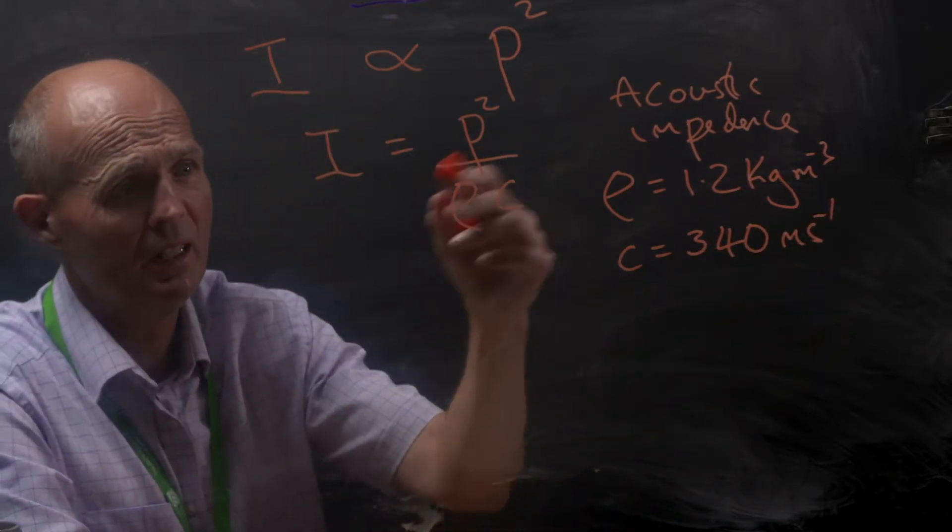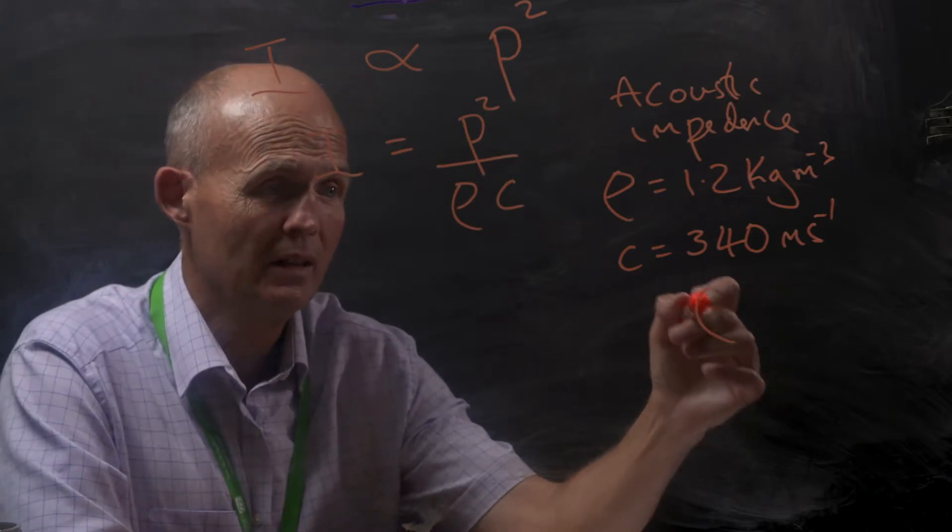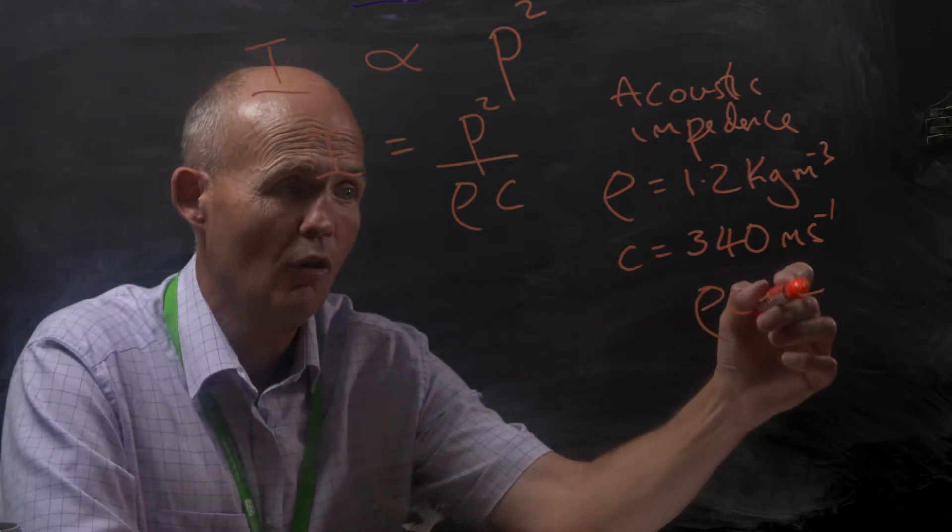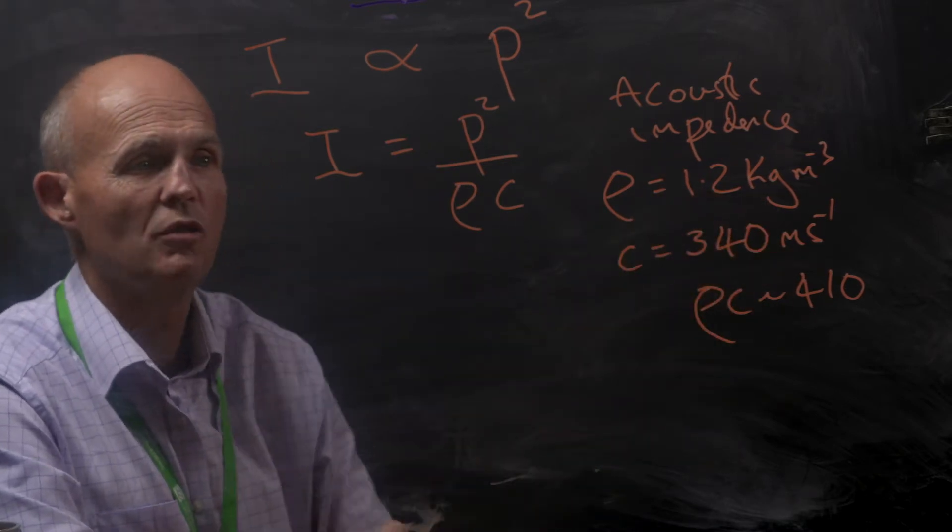So this figure here, or this product here of rho times c, is typically around 410, and the unit is a combination of those units there.